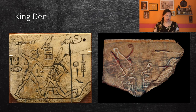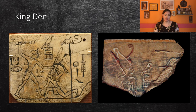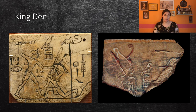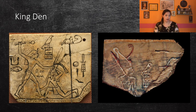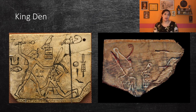Another famous king was King Den, who was the first king depicted wearing the double crown of Egypt. The double crown was a combination of the crown of Lower Egypt, which was the red crown, and the crown of Upper Egypt, which was the white crown. Wearing both crowns was extremely significant, as it indicated that the pharaoh had control over both parts of Egypt. Interestingly, neither crown has ever been found archaeologically, so it is not even known how they were made. Many archaeologists presume they might have been woven and painted, making them very fragile and unlikely to be preserved.